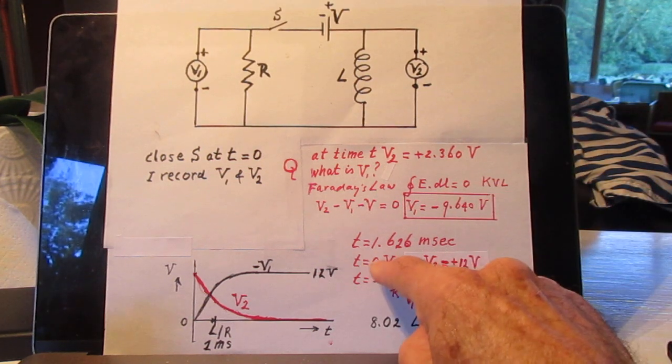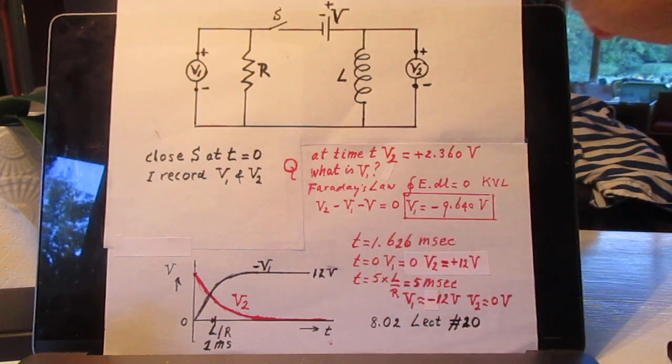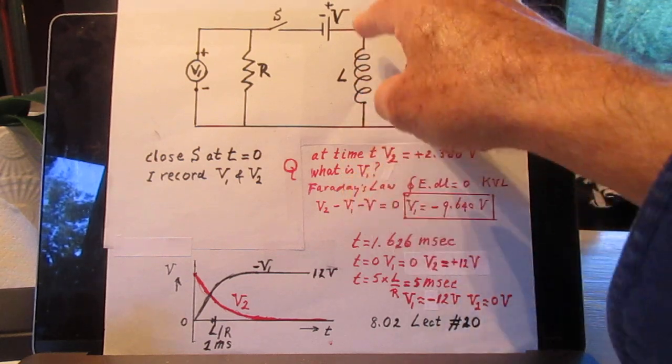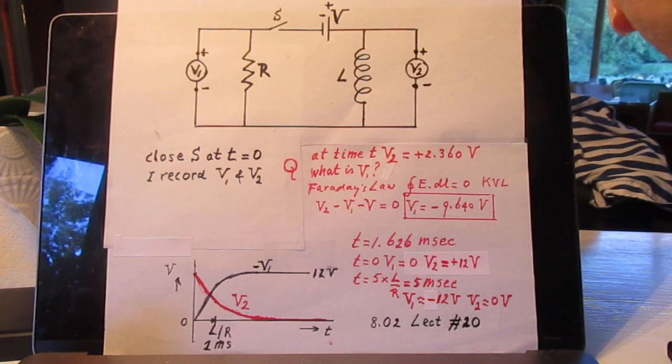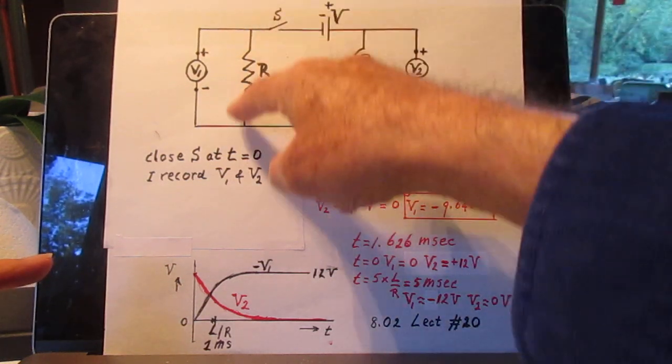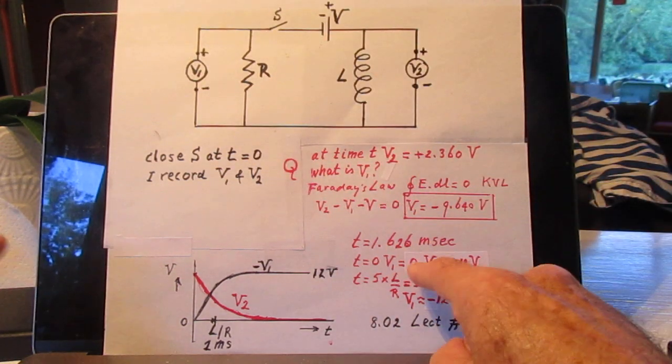Let's first go to T equals 0. At T equals 0, there is no current flowing through this circuit because the self-inductor prevents that from happening. So, if there is no current going through R, clearly, V1 must be 0.